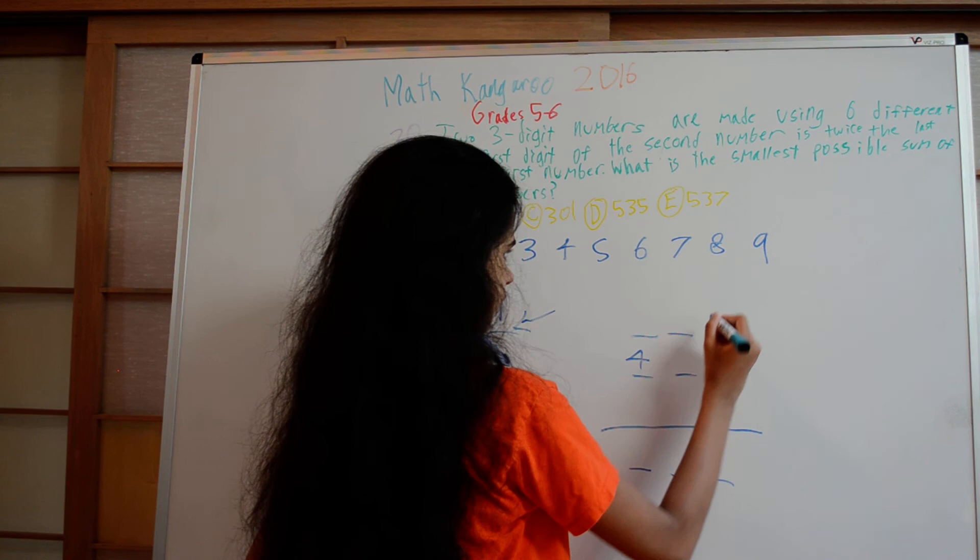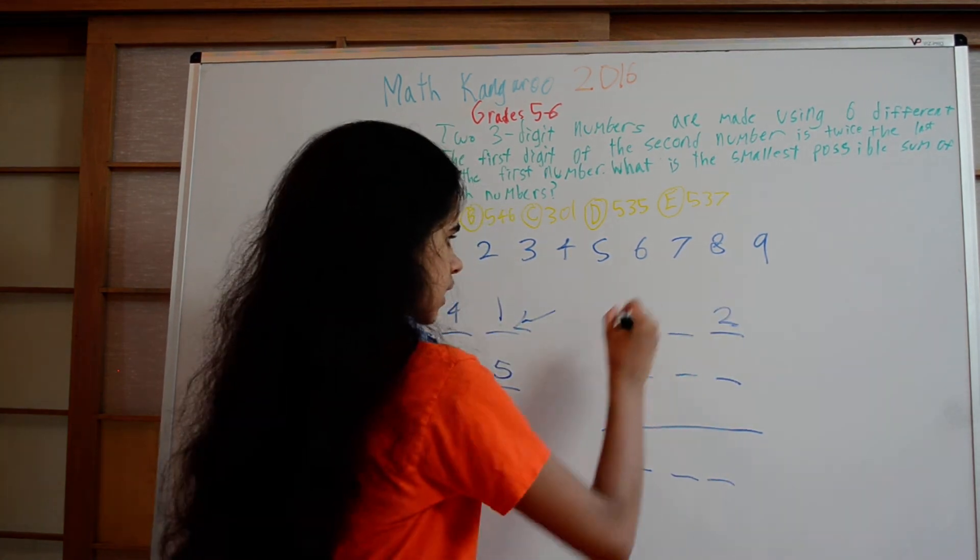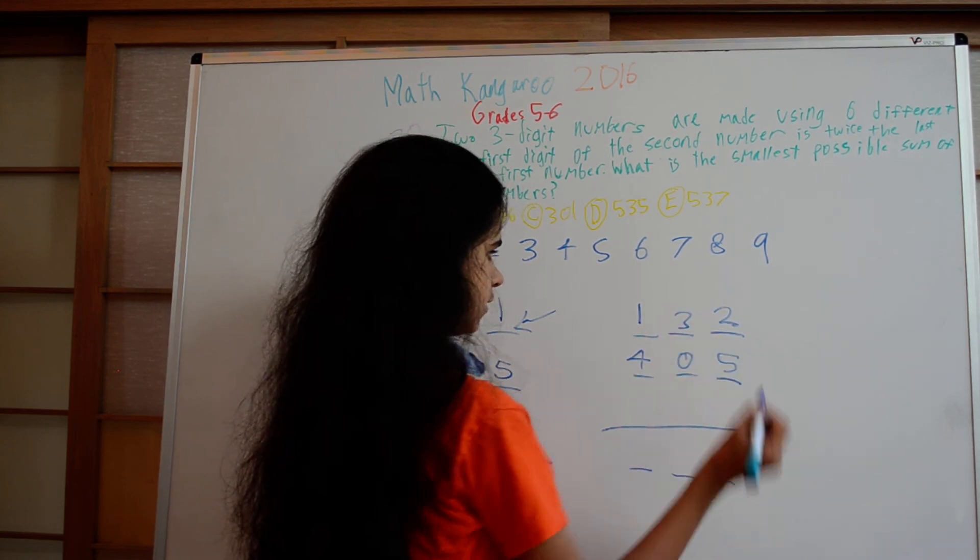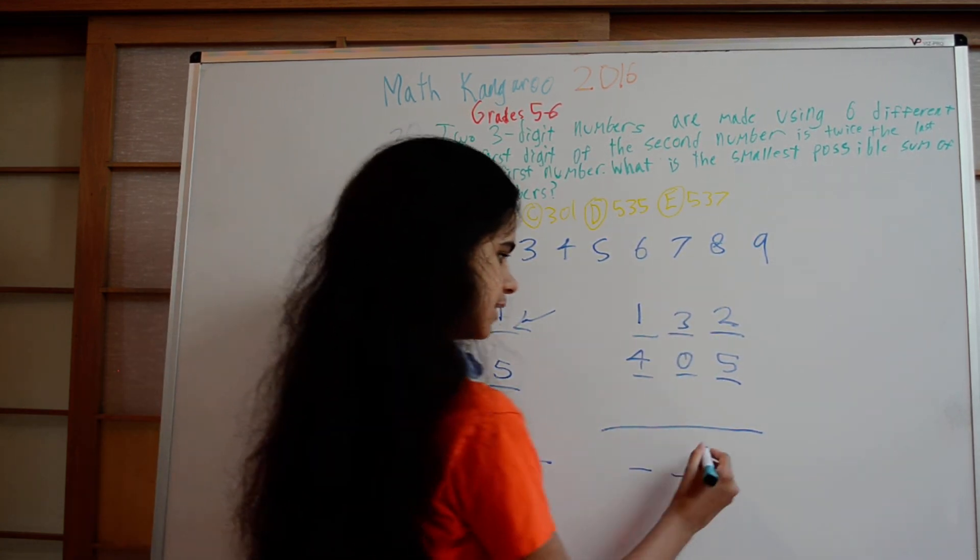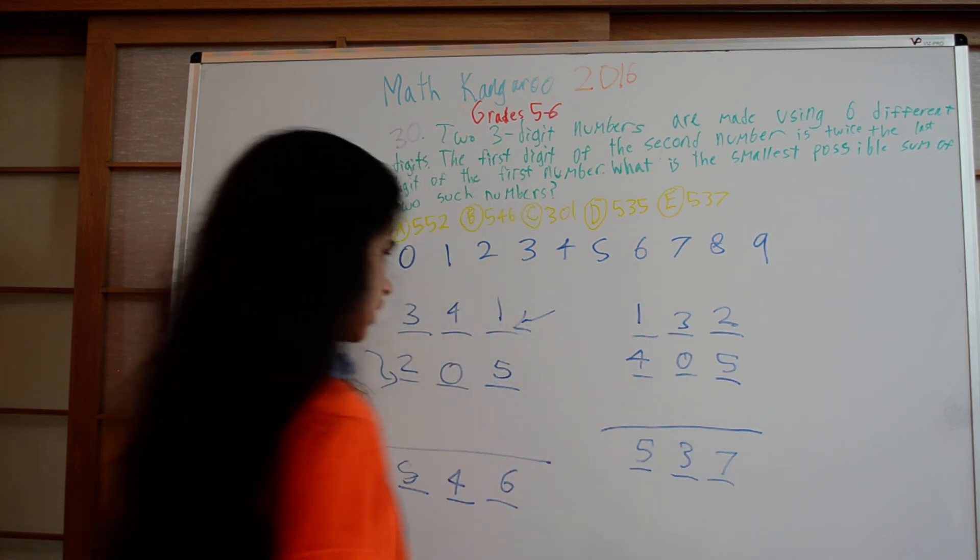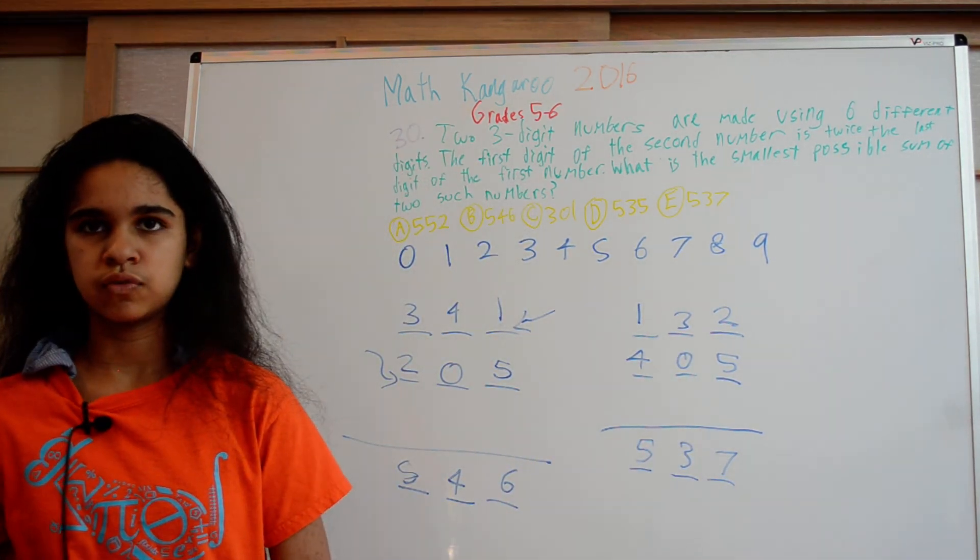If we put 4, that would have to be a 2. Now we'd want to put 1 there. And then here we could put 0 or 3 in some order, and here 5. This gives us a sum of 537, which is less than the 546 we got before.